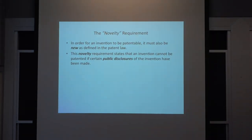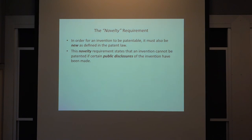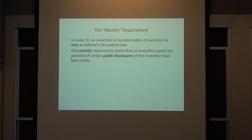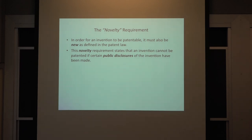If you happen to come up with the same mousetrap that somebody else came up with and present it to the patent office, the examiner is going to look at the prior art — whether it's a potato or a mousetrap — and find that somebody else has already invented the exact same thing. Whether by accident or design, your proposed invention is not novel and doesn't satisfy the second requirement.